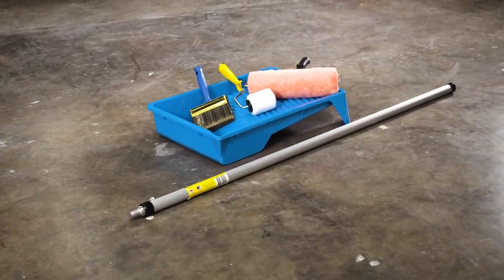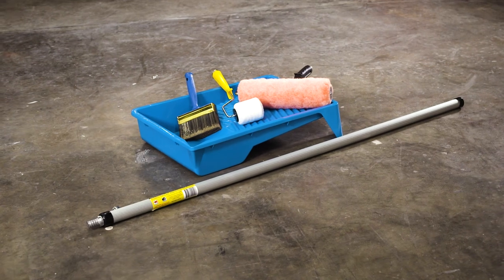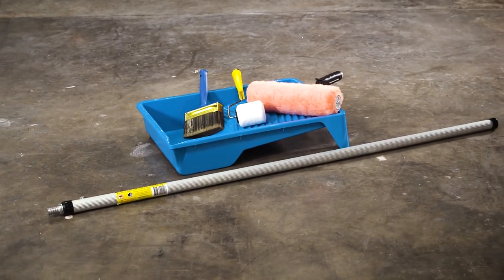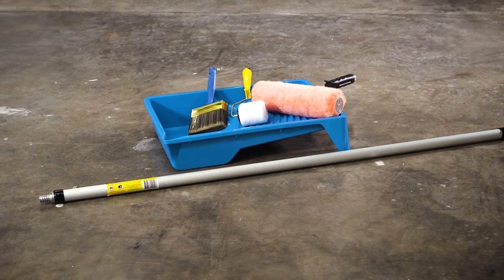To achieve the desired finish we used a 20mm long nap synthetic roller on a pole, a 270mm tray and a mini roller painting kit.